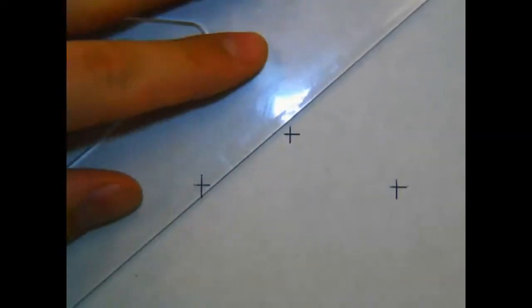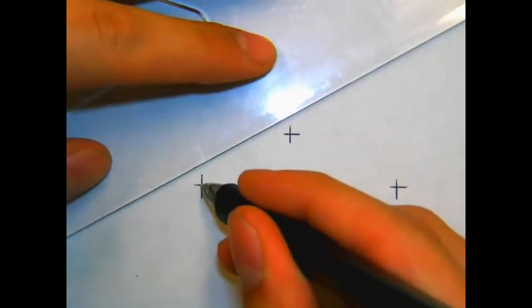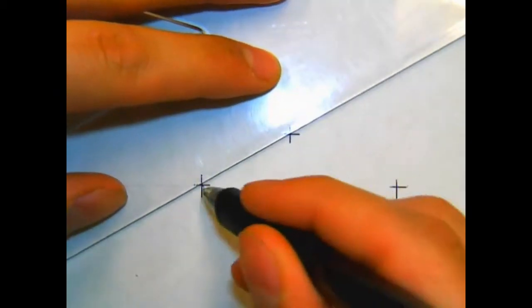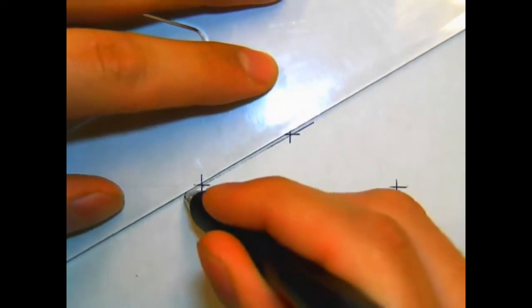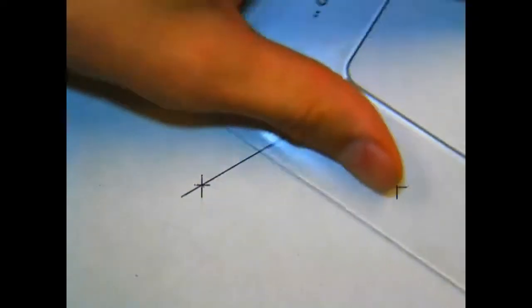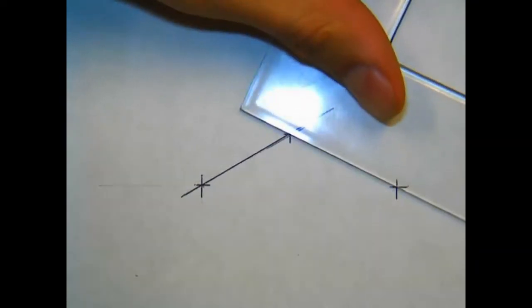There's often a time when you want to draw an arc or a circle through three given points. To do that, first you draw a line from one point to the second point, and then from the second point to the third point.